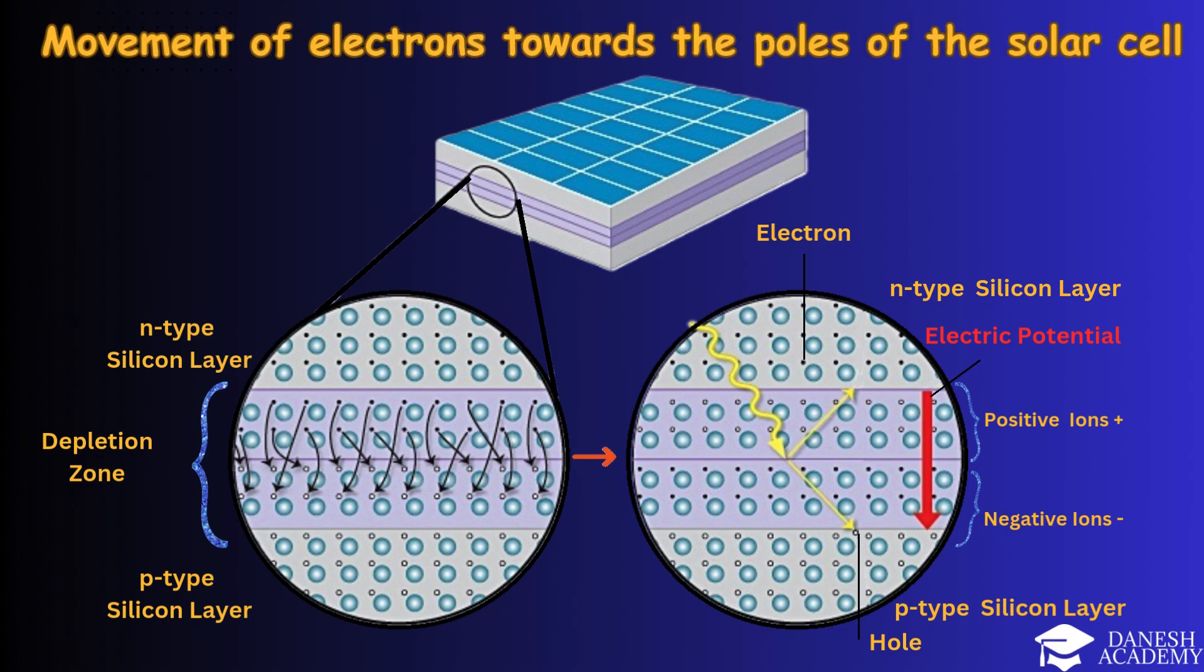Depletion zone: The region where the N-type layer, rich in electrons, and the P-type layer, rich in holes, meet is called the depletion zone. Here, positive and negative ions create an electric potential, as shown in the image.